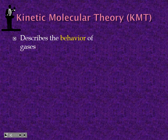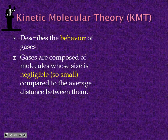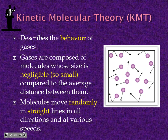Now the Kinetic Molecular Theory — these are the postulates and assumptions made about gases describing their behavior. Gases are composed of molecules whose size is negligible, so small compared to the average distance between them. We say that individually they don't take up volume, have no volume. That assumption sometimes gets deviated in different conditions, but under ideal conditions we assume gas individual particles have no volume. They move in random straight lines and bounce off each other and off the walls of the container.